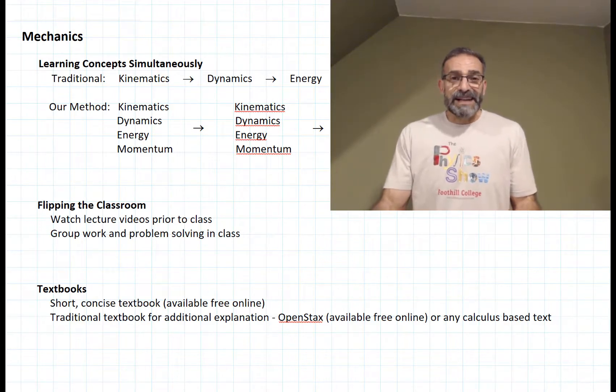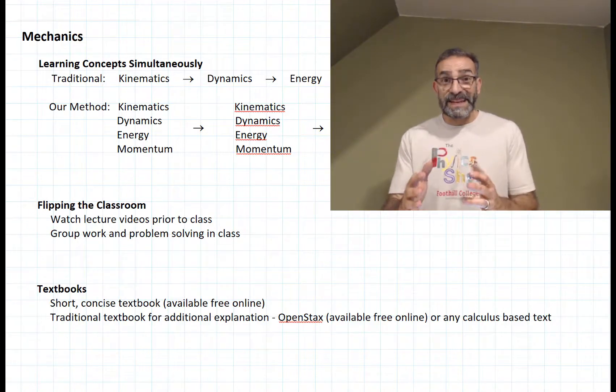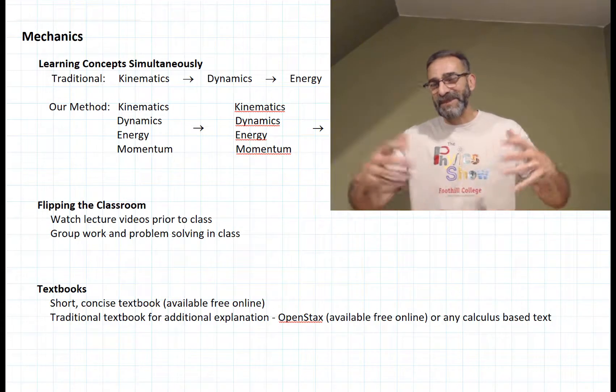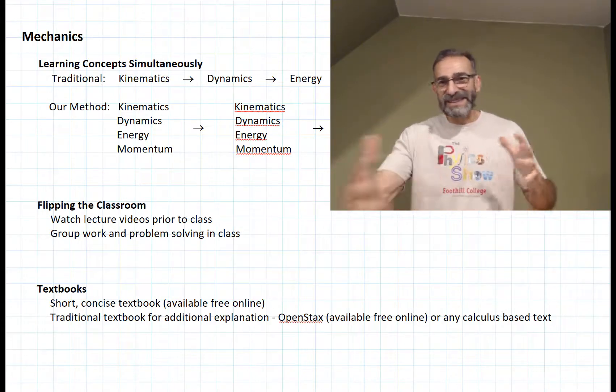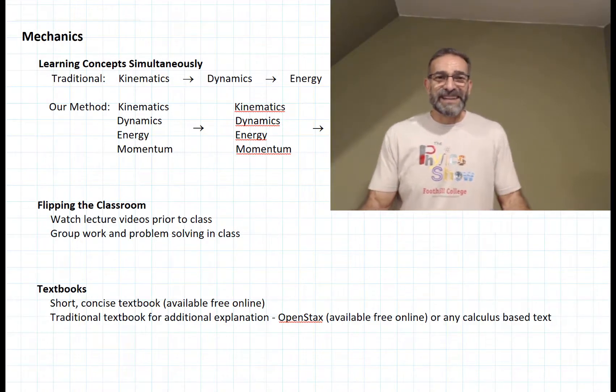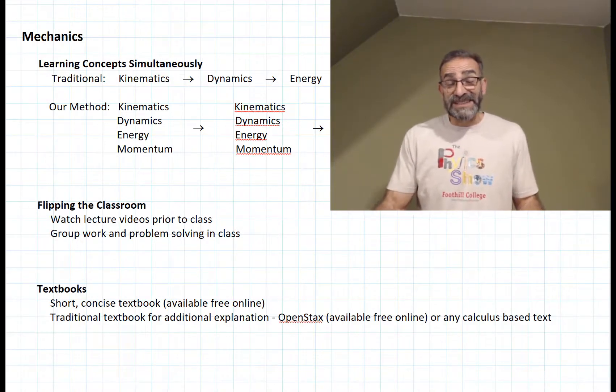The nice thing about a nice short concise textbook is that you'll probably read it, whereas when you open up a big textbook and you see there's 60 to 100 pages in the chapter, you know, you get a little intimidated, and sometimes you don't even read the chapter.